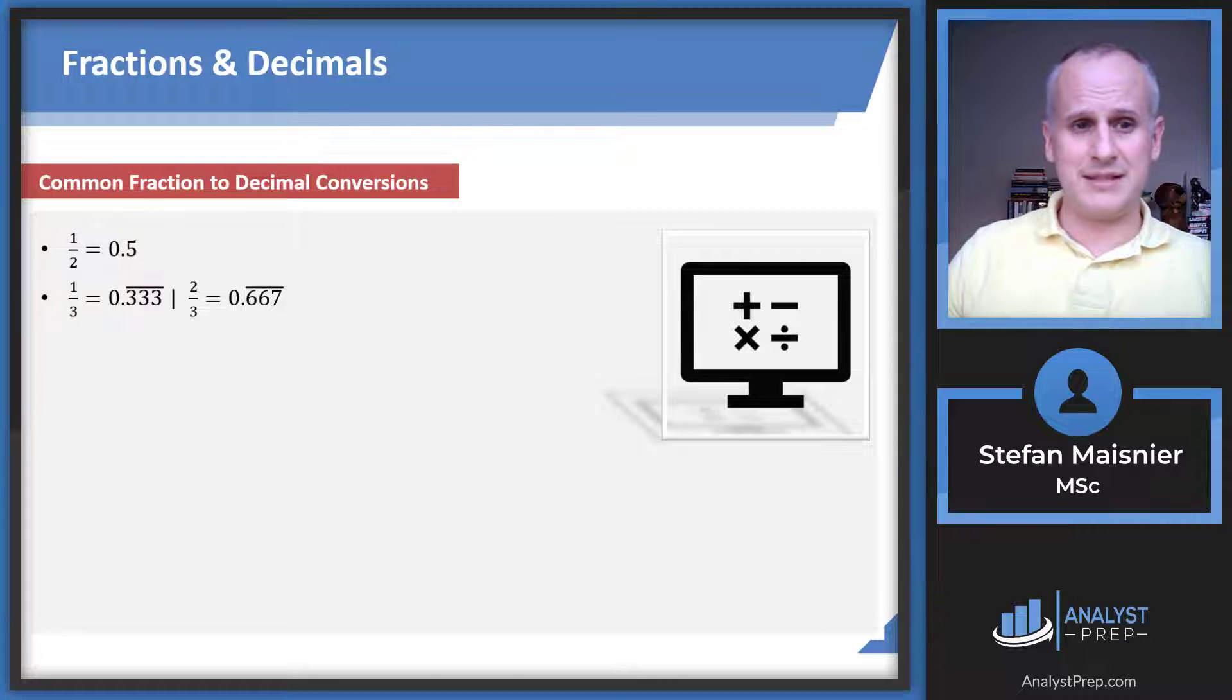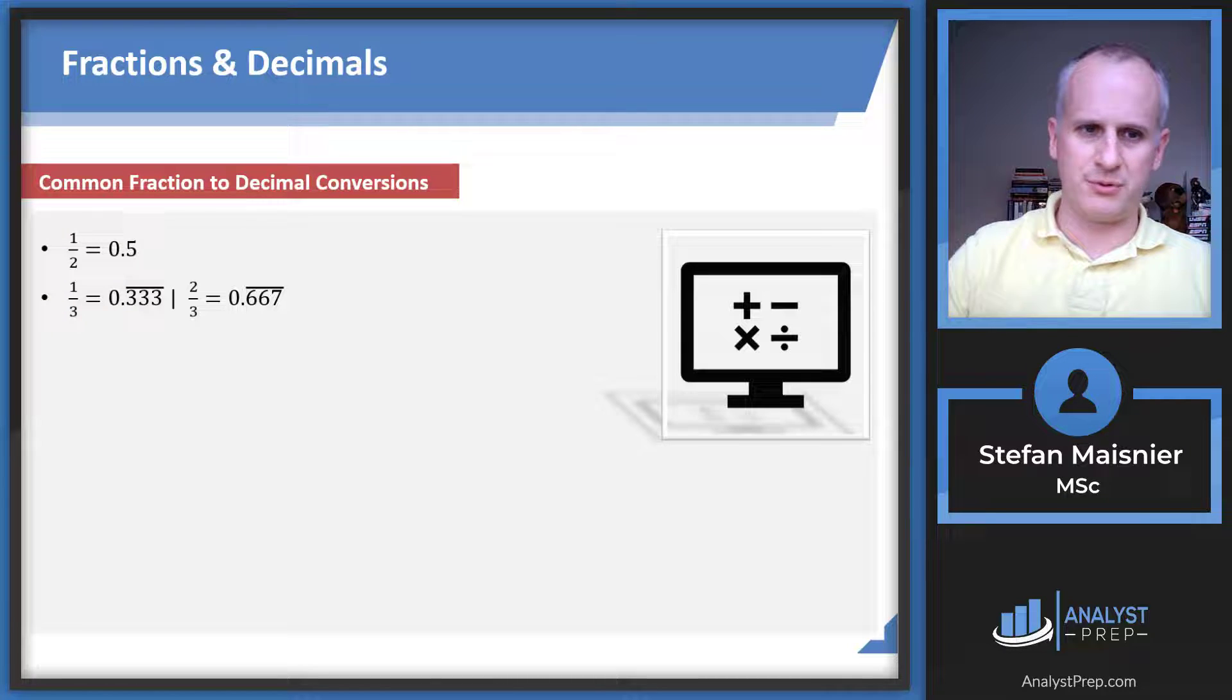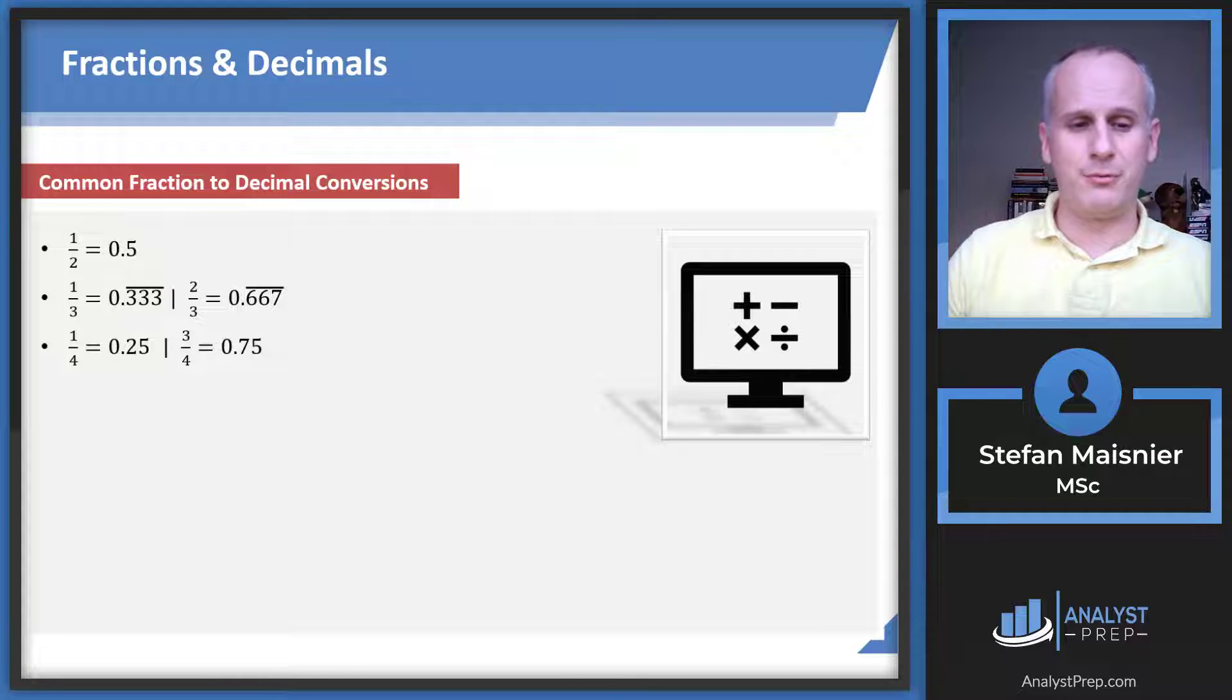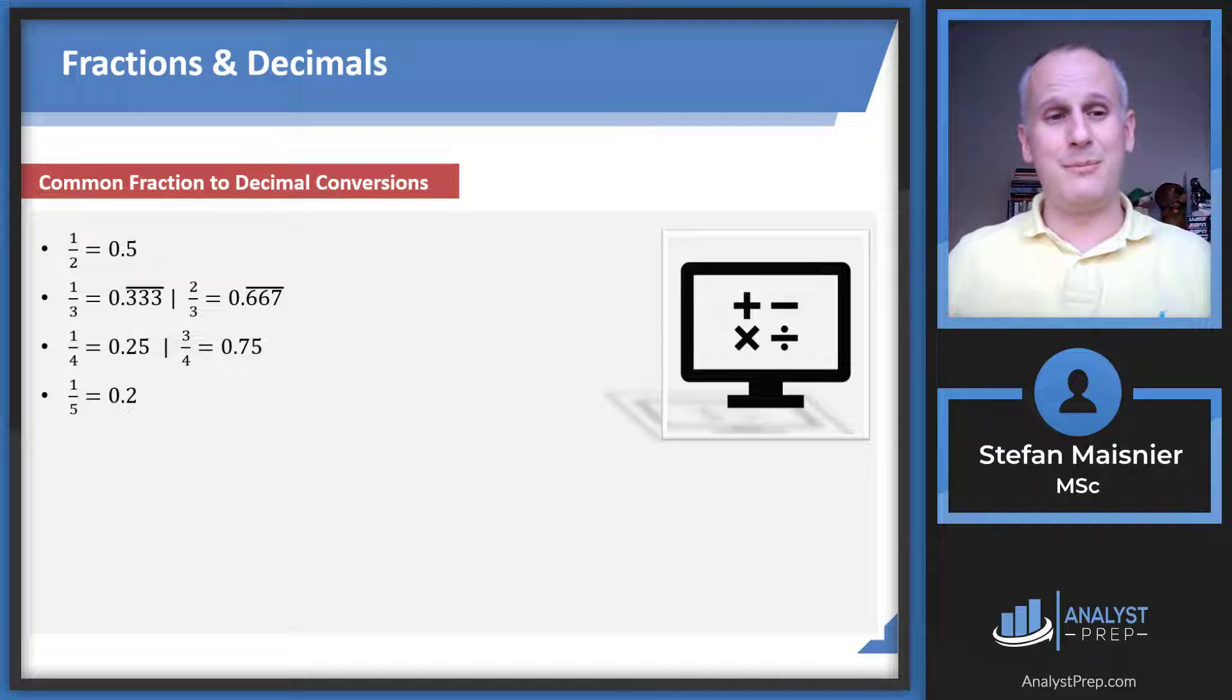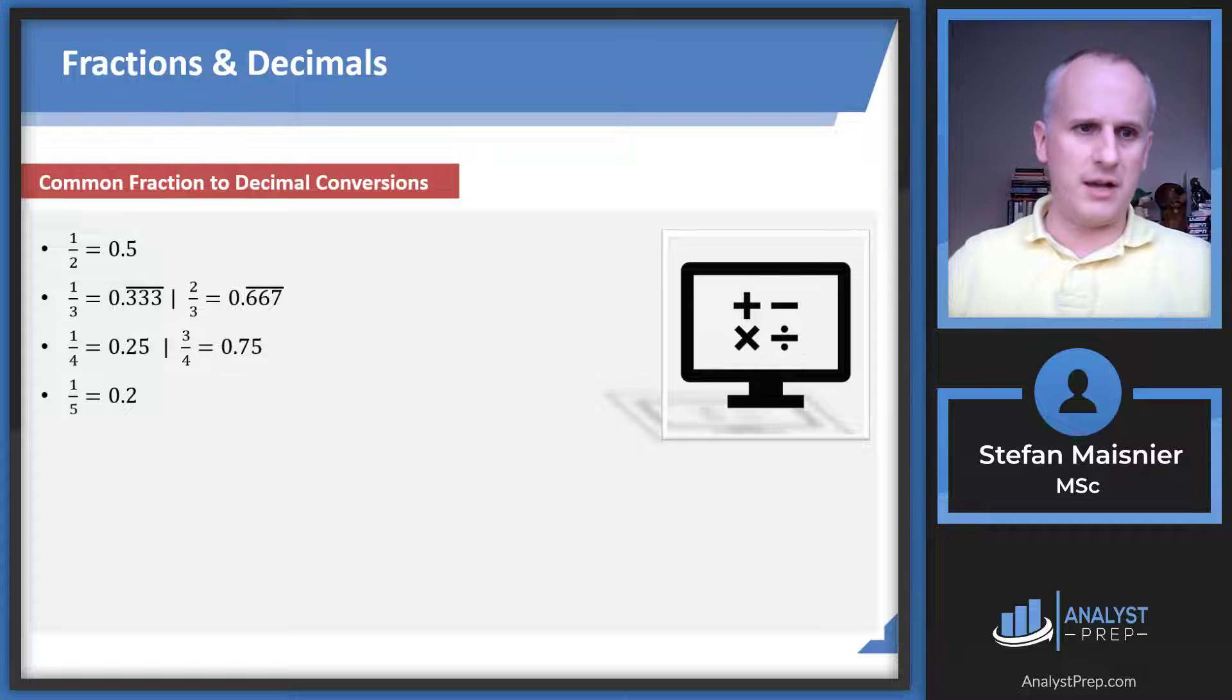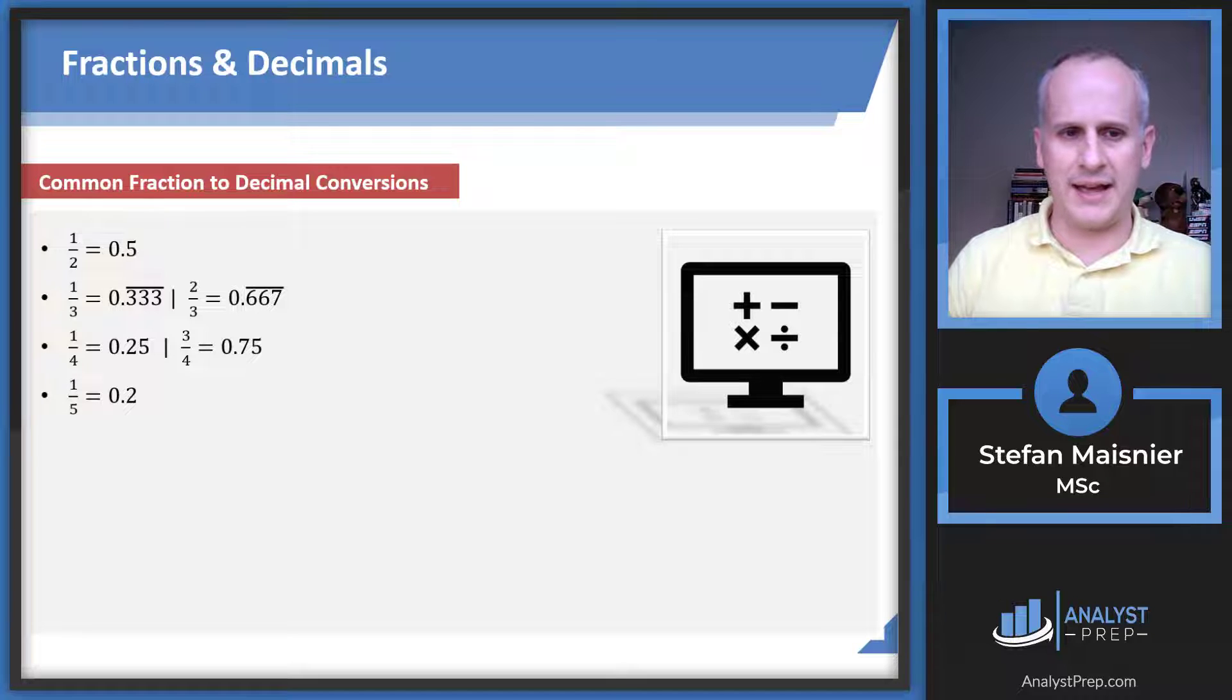One half is 0.5. One third is 0.333 repeating, two thirds is 0.667. One quarter and three quarters are 0.25 and 0.75 respectively. One fifth is 0.2, and you should be able to extrapolate from one fifth all the other fifths. Two fifths is 0.4, four fifths is 0.8.